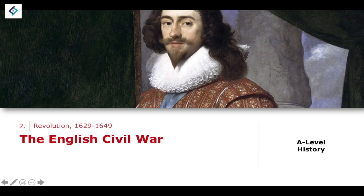In this lesson, we're going to look at some of the events during the First English Civil War, but we're going to focus a little bit more on some of the historiographical aspects of the conflict. We're going to focus on why it was the case that the Royalists were defeated in the English Civil War and why the Parliamentarians ultimately win.